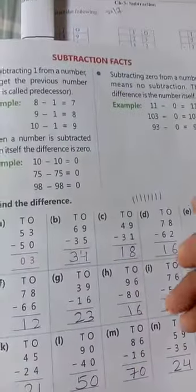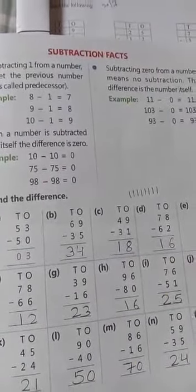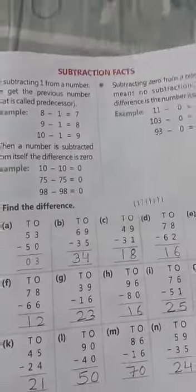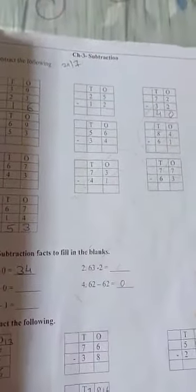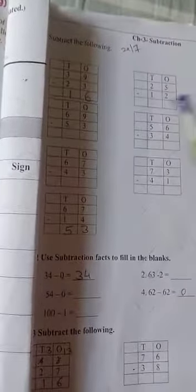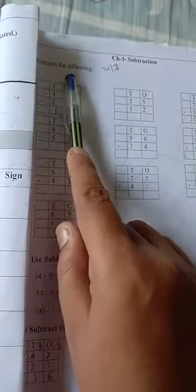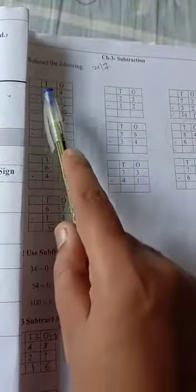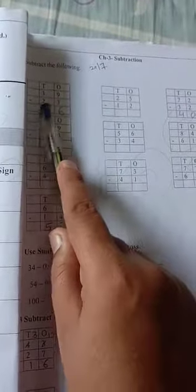One more important thing is: in subtraction, always bigger number upside and smaller number downside. Now we start our worksheet. Chapter number 3, subtraction, page number 3. Our first question is subtract the following. We have sums given below and we need to subtract them. I told you, always bigger number upside and smaller number downside in subtraction.